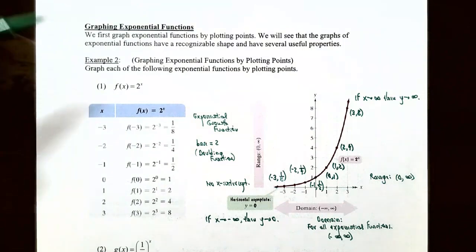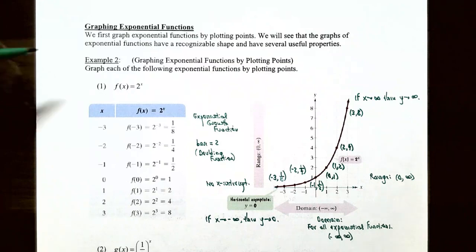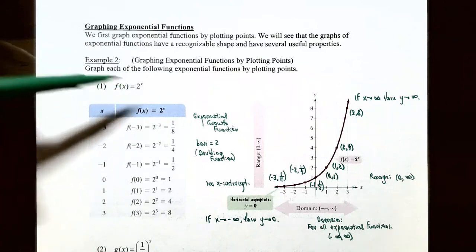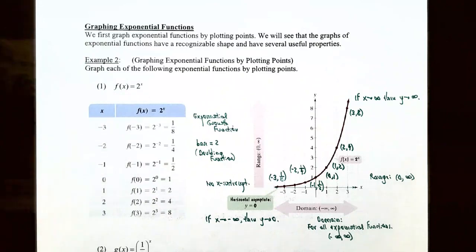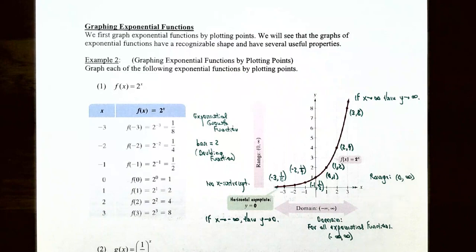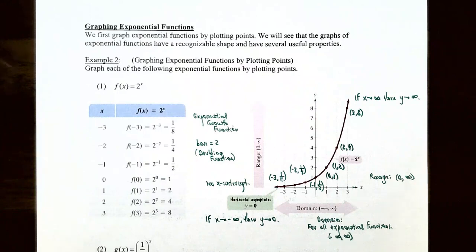Since we're graphing exponential functions for the first time, let's graph them by plotting points. Example two: graph f of x equals 2 to the x. The domain is all real numbers, so let's choose x values of negative 3, negative 2, negative 1, 0, 1, 2, and 3. Starting with x equals 0: f of 0 equals 2 to the 0 power equals 1. So the y-intercept is the point (0, 1).